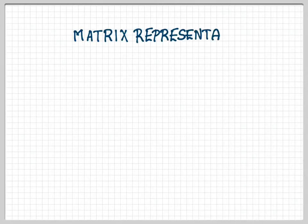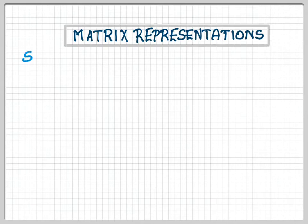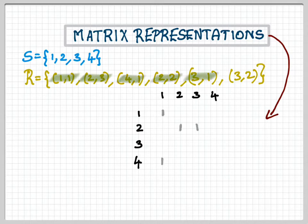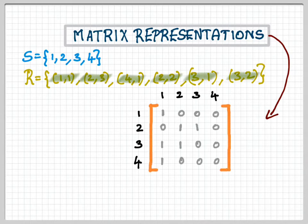We saw the matrix representation of a relation — given a set S with elements 1, 2, 3, 4 and a relation, the matrix representation is clear. What we'll be discussing now is what is called a graph representation.